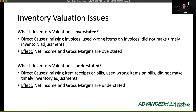If your inventory is overstated, the most common direct causes are missing invoices that should reduce inventory, using the wrong item on an invoice, or using a non-inventory part instead of an inventory part on an invoice. Those are the two most common causes — you're basically missing the transactions that would reduce that inventory. Not making timely adjustments can also cause overstated inventory.